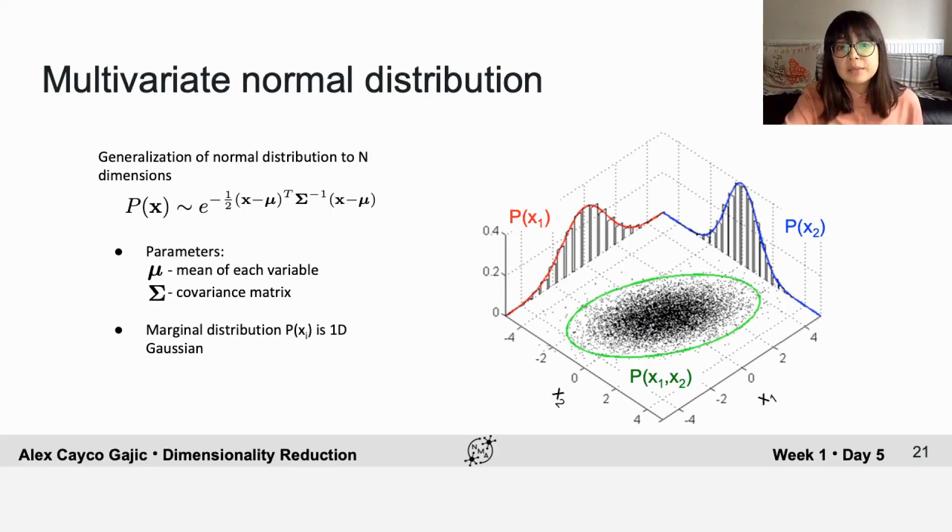Mu is the mean of each variable, or each neuron's firing rate, and sigma is the covariance matrix.